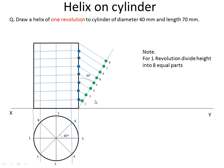Next we have to draw horizontal lines from each point. Give the names 1 dash, 2 dash, 3 dash, 4 dash, 5 dash, 6, 7, 8, and the 9th (or 1 dash). The intersection of 1 and 1 dash gives point P1; 2 and 2 dash gives P2; 3 and 3 dash gives P3; 4 and 4 dash gives P4; similarly we get P5, P6, P7, P8, and P9.